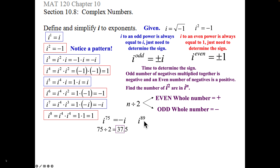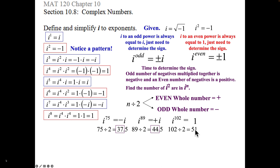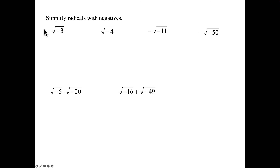i to the 89th power: 89 is odd, so it's i. 89 divided by 2 is 44.5 — whole number 44 is even, so the answer is positive i. i to the 102nd power: 102 is even, so it's a 1. 102 divided by 2 is 51 — that's odd, so the answer is negative 1. i to the 124th power: 124 is even, so it's a 1. 124 divided by 2 is 62 — that's even, so the answer is positive 1.